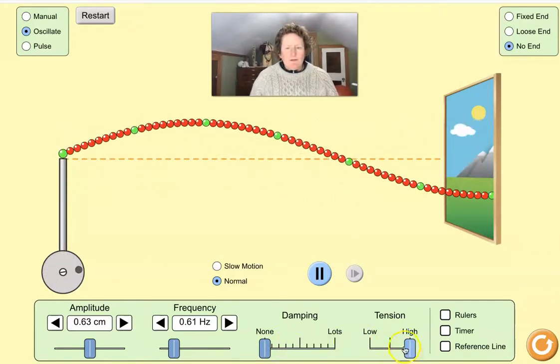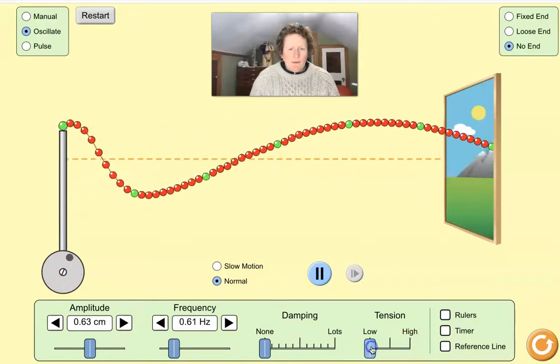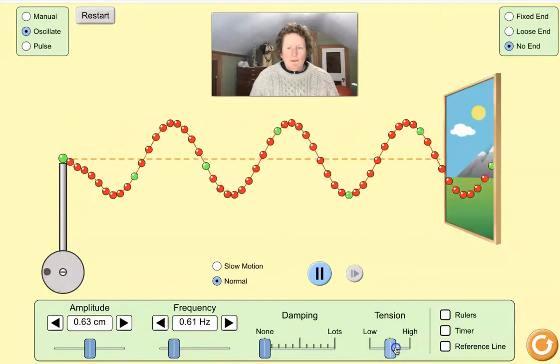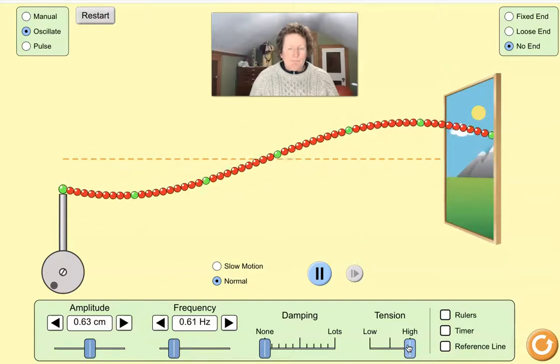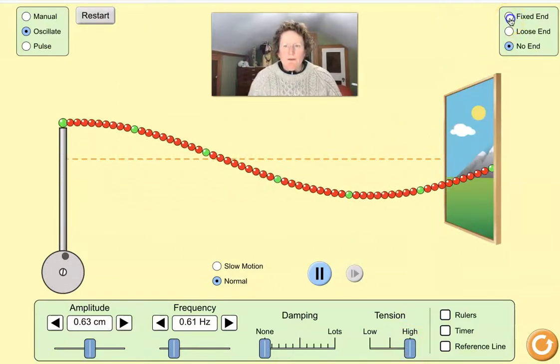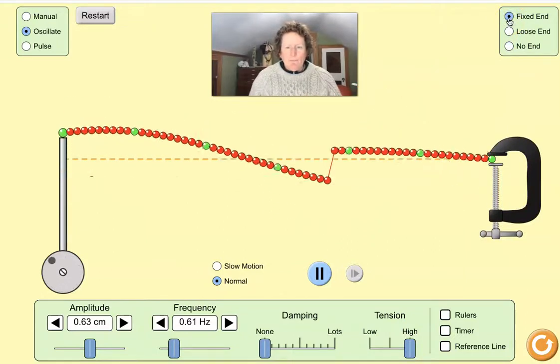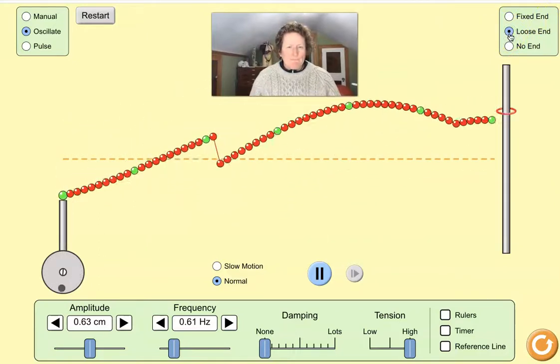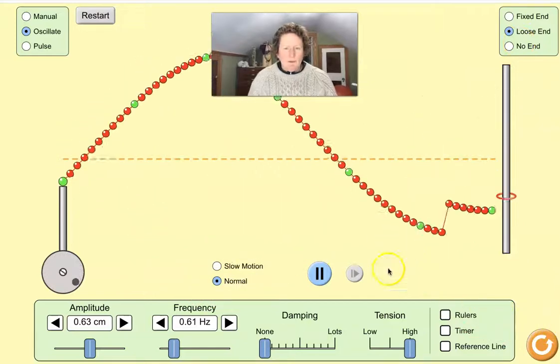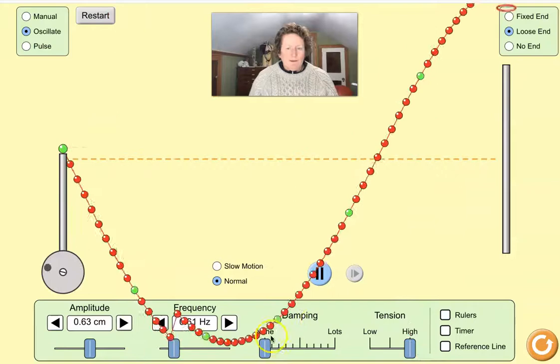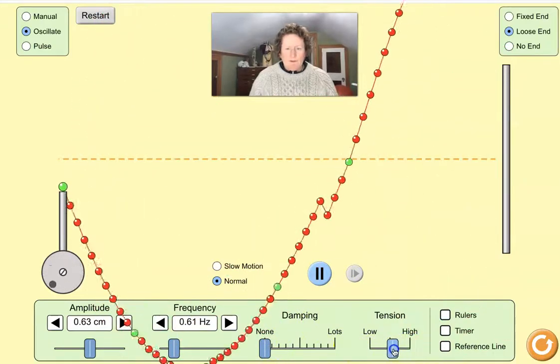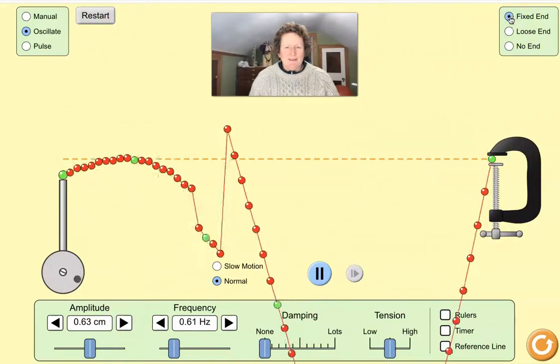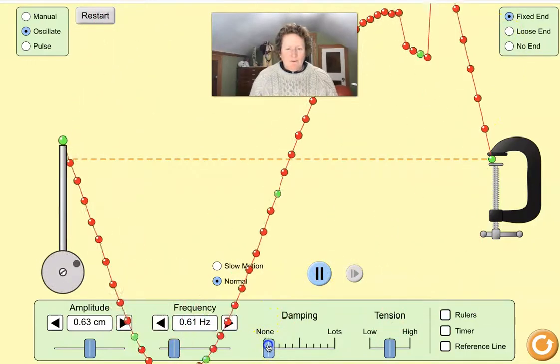You can explain how tension changes waves. There's low tension. There's high tension. You can see that that changes the waves. You can see how having a fixed end will change a wave or a loose end. Lots of crazy things going on there. You might want to change the tension there a little bit. Or you might want to put on a fixed end. Or you may want to put on a little damping.